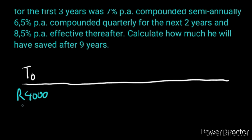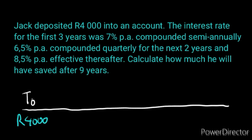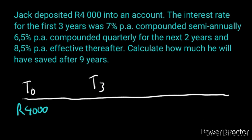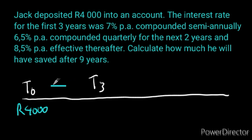He deposited the amount immediately, hence we put it at T0. Then the interest rate for the first three years was 7% per annum compounded semi-annually. So we mark T3. Whenever it's compounded quarterly, write I4 — this stands for four times per year. If they say semi-annually, write I2. So we write I2 because it was compounded semi-annually. We divide the rate by 100 to get 0.07, so we can substitute it immediately in the calculation.